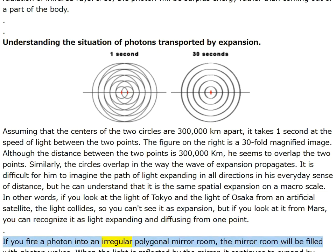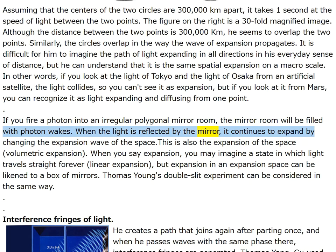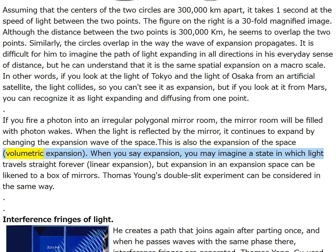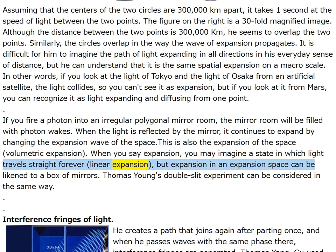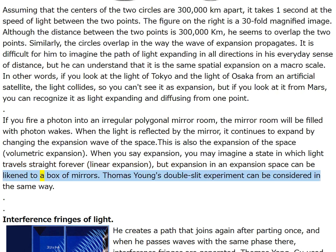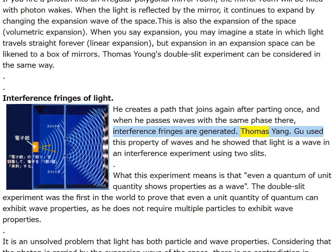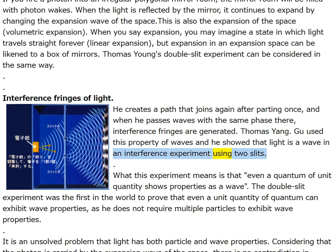If you fire a photon into an irregular polygonal mirror room, the mirror room will be filled with photon wakes. When light is reflected by the mirror it continues to expand by changing the expansion wave of the space. Expansion in an expansion space can be likened to a box of mirrors — volumetric expansion. Thomas Young's double slit experiment: he creates a path that joins again after parting once, and when waves with the same phase pass there, interference fringes are generated. Young showed that light is a wave in an interference experiment using two slits.